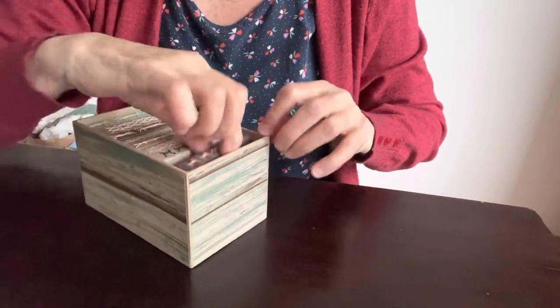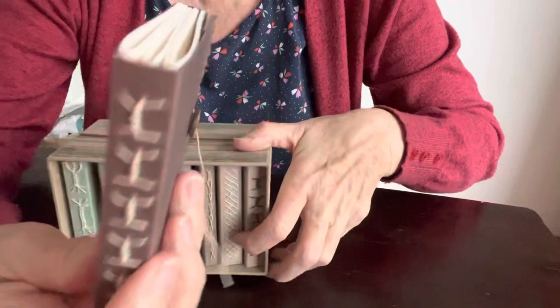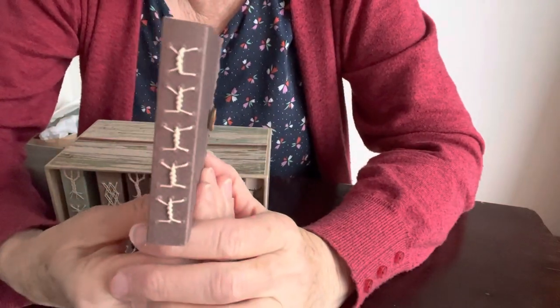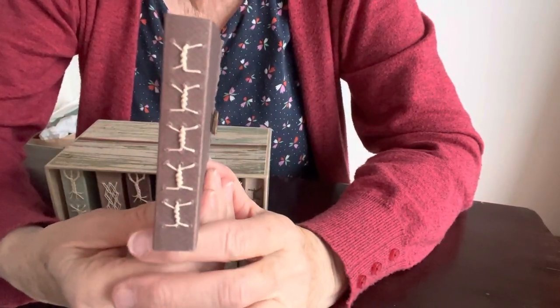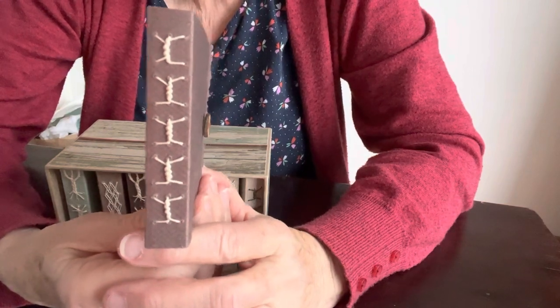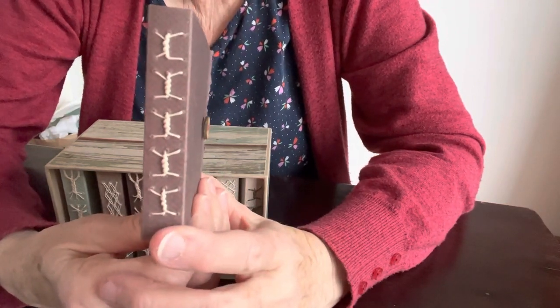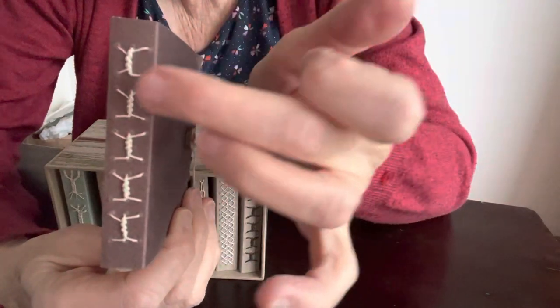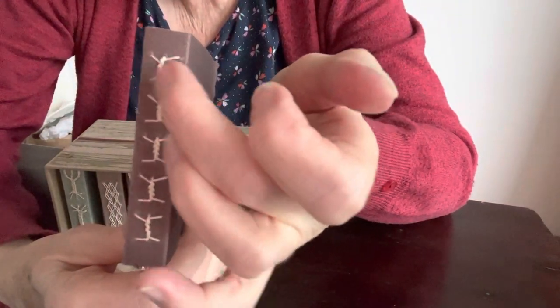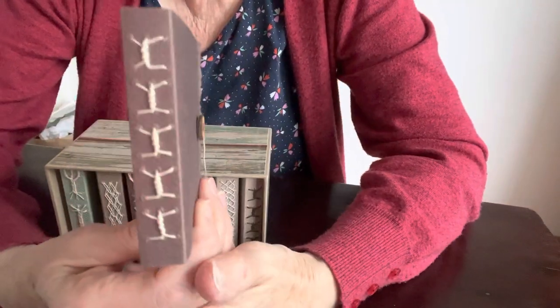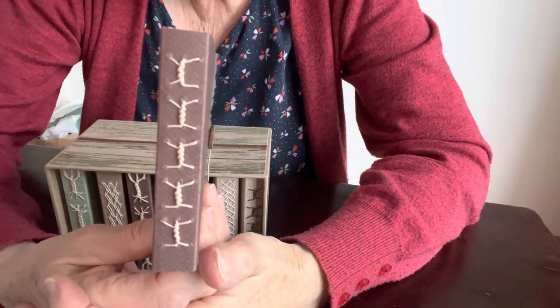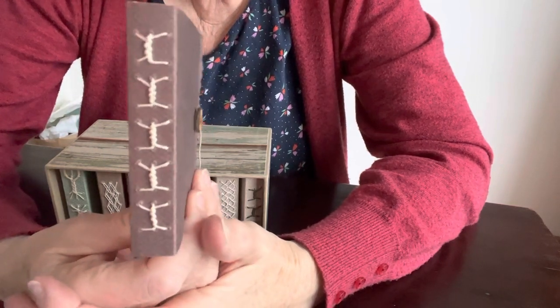And here we have the rope. I always call this binding the barbed wire binding because it looks a lot like barbed wire. It's a three section binding and you wrap your thread around the middle, the sewing of the middle section. And it gives this effect.